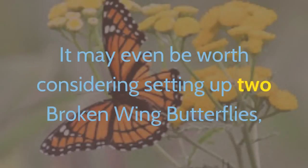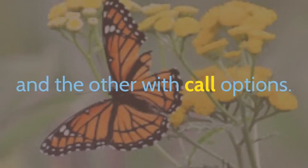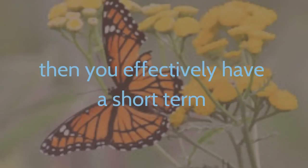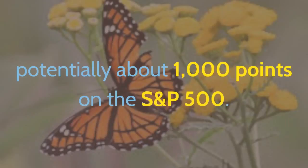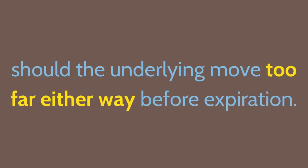It may even be worth considering setting up two broken wing butterflies facing opposite directions — one with puts and the other with call options. If you can realize a credit from each one, then you effectively have a short-term range trading strategy in place. Taking our example, that's potentially about 1,000 points on the S&P 500. The double credit that you receive will also offset any losses should the underlying move too far either way before expiration.